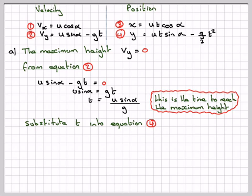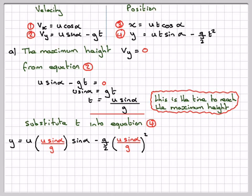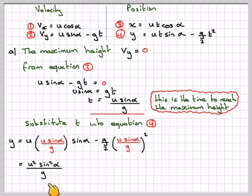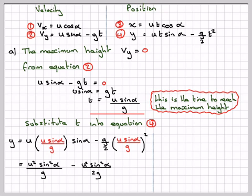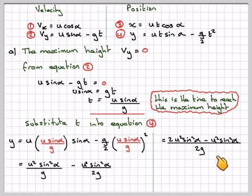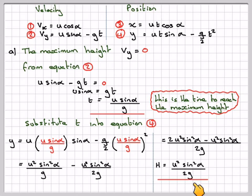Substituting t into equation 4 gives the vertical position at that time. We have y = u·(u·sin(alpha)/g)·sin(alpha) − (g/2)·(u·sin(alpha)/g)². Simplifying: u²·sin²(alpha)/g − u²·sin²(alpha)/(2g). Putting over a common denominator: [2u²·sin²(alpha) − u²·sin²(alpha)] / 2g. Since 2 minus 1 gives 1, the maximum height is u²·sin²(alpha) / (2g).